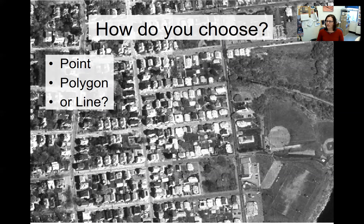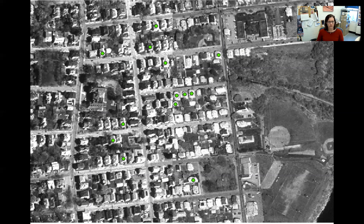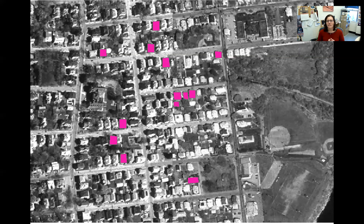For points and polygons in particular, there's a choice in terms of which you might want to use. Here are a bunch of points marking houses in a neighborhood. Why would we choose points instead of polygons? Because we could also define the shape of each house. Polygons can have all the same attributes as points, so why would you ever go with a point? I can come up with two answers. First, it's a lot easier if I'm digitizing something — it's much easier to click points than to meticulously measure the edges of each house. If I'm digitizing a thousand houses, I'd be a lot happier doing that with points.